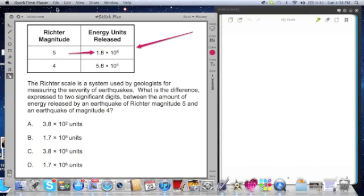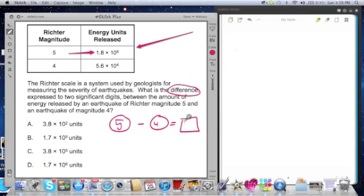Now there's some interesting elements here as far as language goes. One, we're going to be comparing the difference. Sometimes this can get confusing, but I think what it's saying is, what is the energy released in an earthquake with a magnitude of 5, whatever that is, minus whatever that energy is released in a 4? Basically I'm going to be subtracting whatever the energy is in a 5 earthquake with a 4 earthquake. But then it has this other element. It says two significant digits. We'll talk about that in a moment, but I just want to point out that these answers here are all written to the nearest two significant digits.